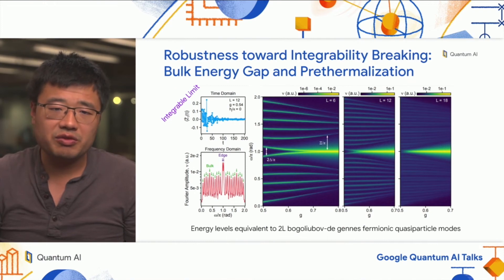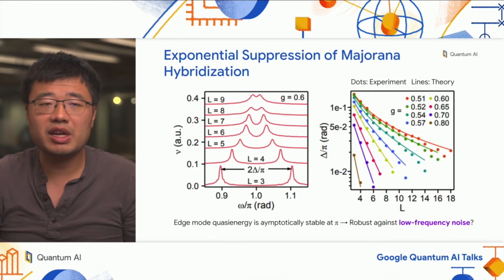But you also realize from the energy band, there's another issue. For short chains like the six qubit chain, the Majorana energies are not completely degenerate. There's a small splitting two delta divided by pi, which separates energy of the two Majorana edge modes. This separation is sensitive to changes in the control parameter G and may induce dephasing. To see how this can be suppressed, we systematically mapped out the energy splitting of the two Majorana edge modes as a function of qubit chain length. You can see that if you increase the length of the chain, this gap rapidly closes. There's essentially exponential suppression of the energy splitting or hybridization between the Majorana edge modes.